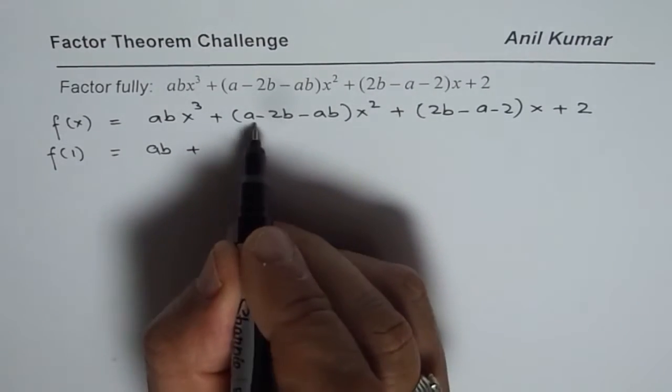Expanding abx² + ax − 2bx − 2 and group-factoring: from the first two terms, ax is common, leaving (bx + 1). From the last two terms, taking −2 common also gives (bx + 1). So (bx + 1) is a common factor, leaving (ax − 2), giving (bx + 1)(ax − 2).